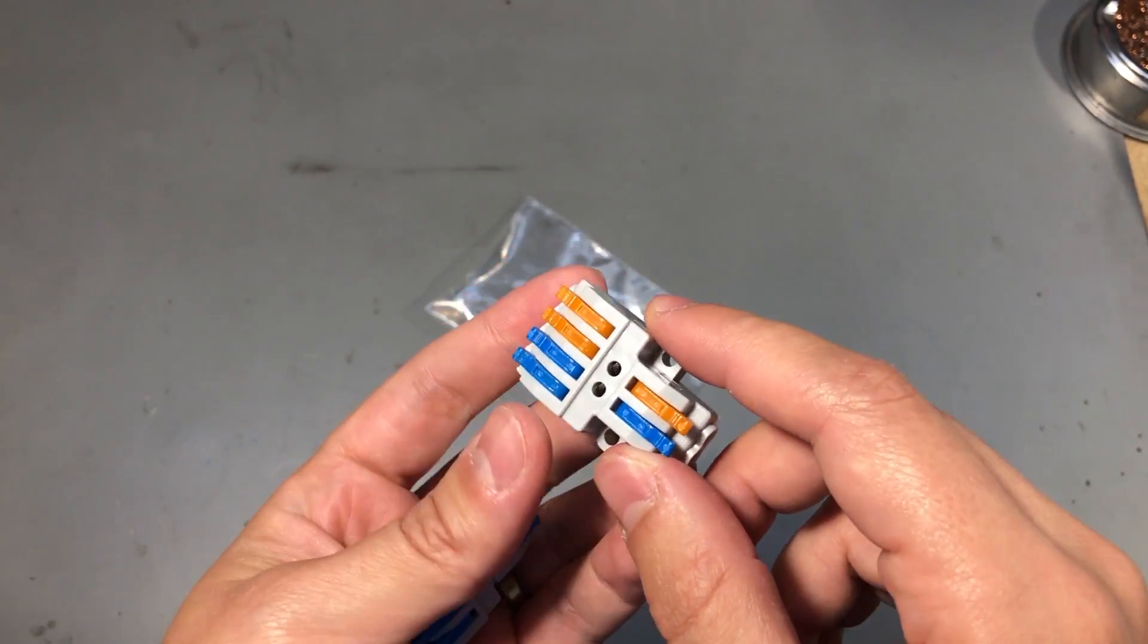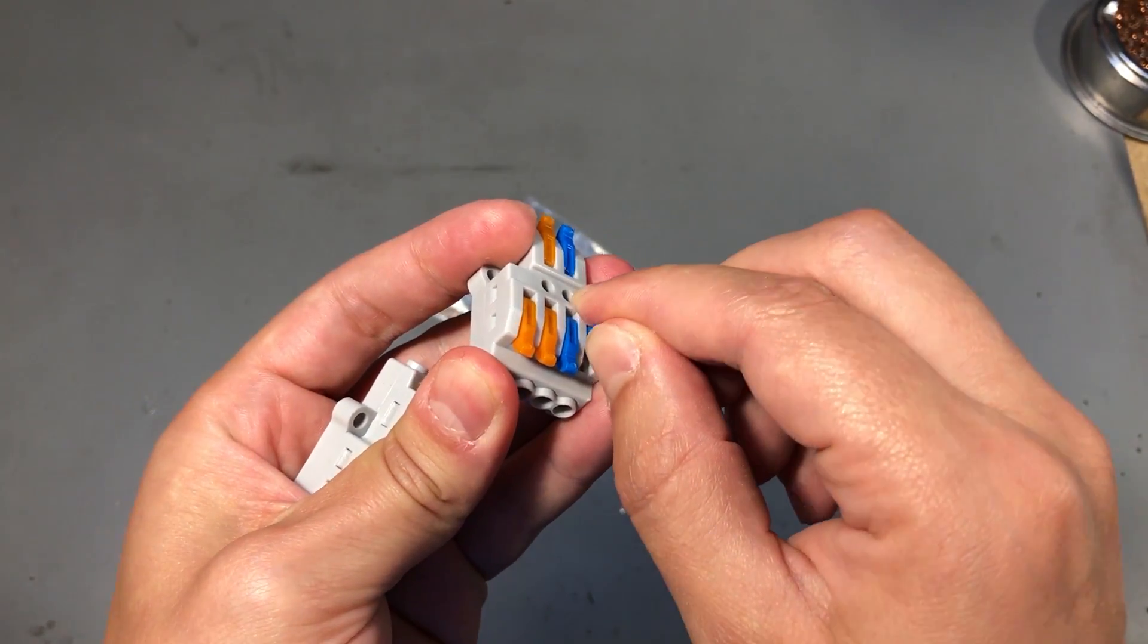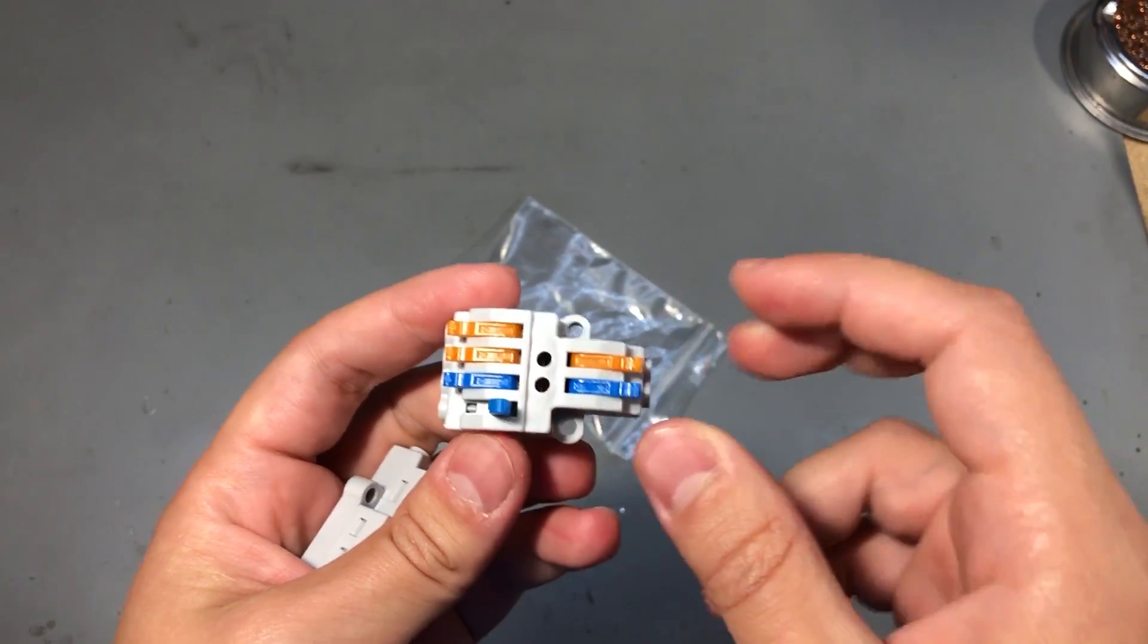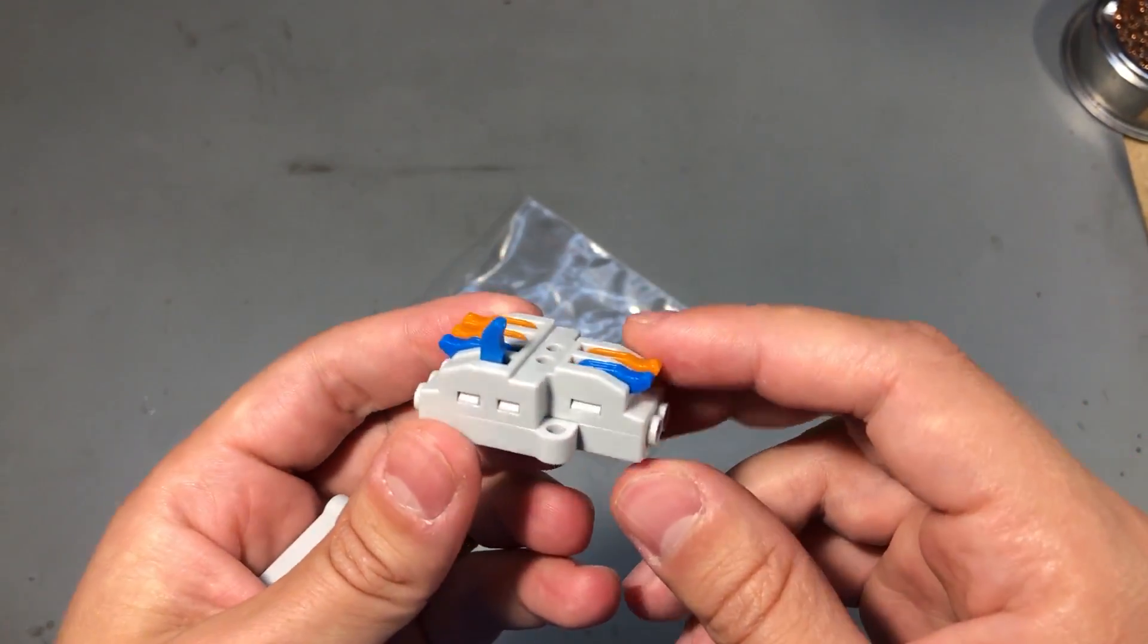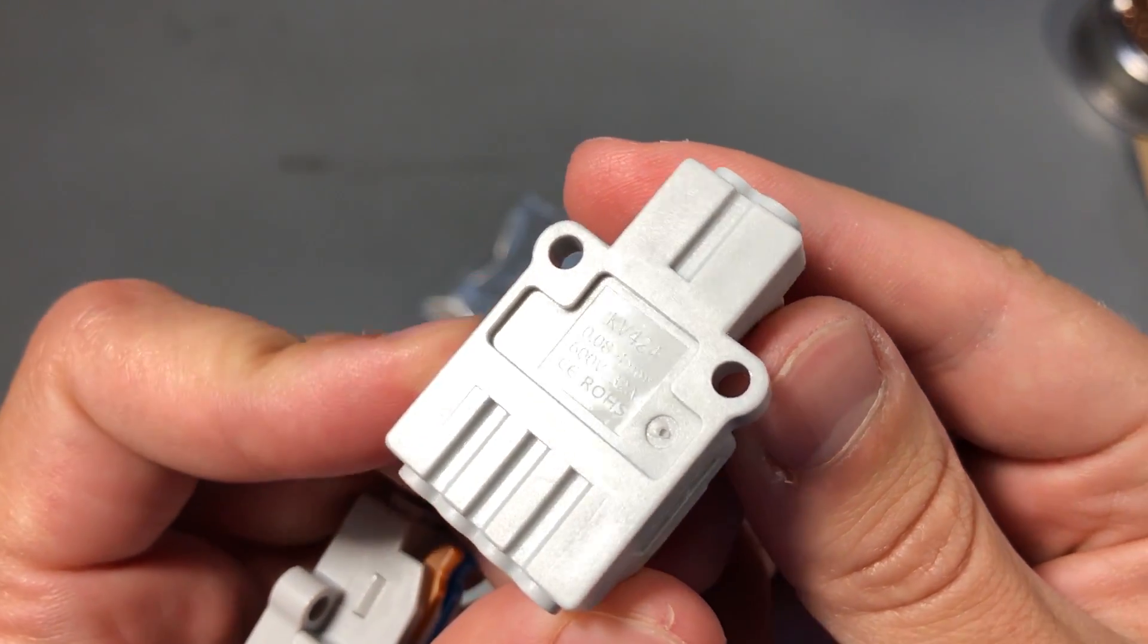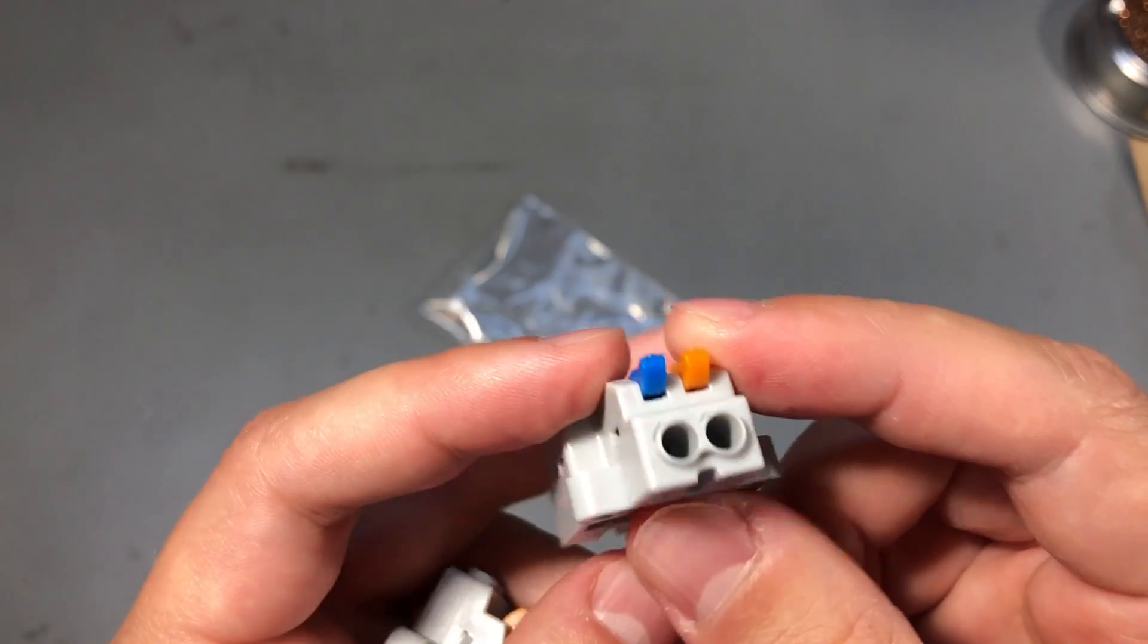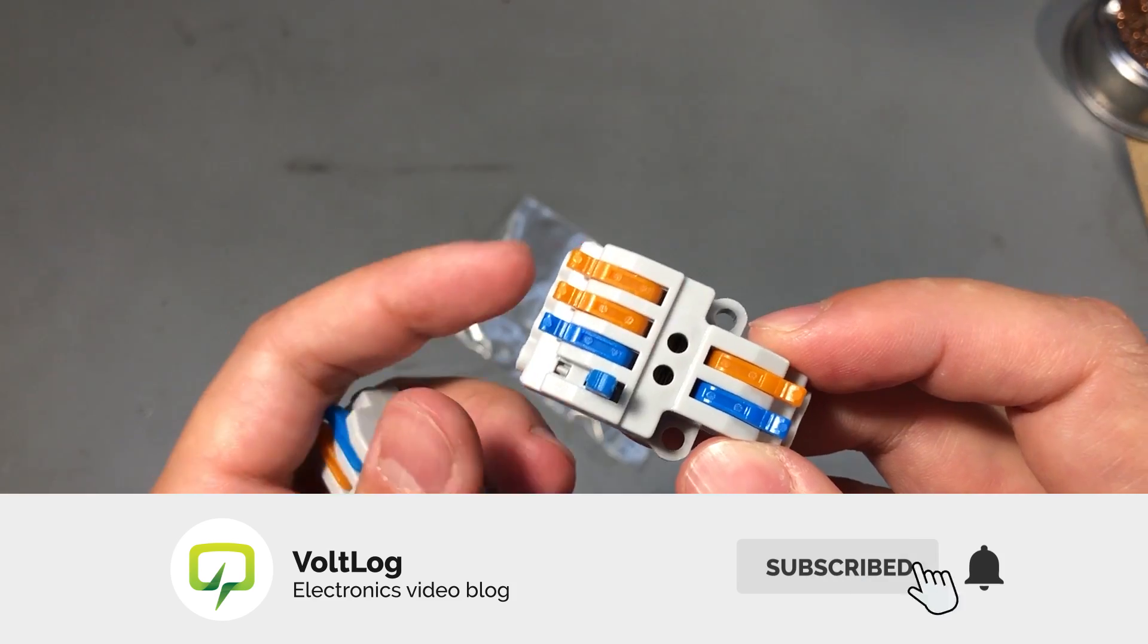I'm going to start with these quick connectors. These are two input to four output type connectors and they can be useful if you want to split a two wire pair into a four wire pair and have those connected without having to solder wires or twist them together or crimp them in a fixed way. These are rated for 600 volts and 32 amps and can take a wire with a diameter between 0.08 and 4 millimeters. As you can see the holes are quite wide, but as always take these specs with a grain of salt.